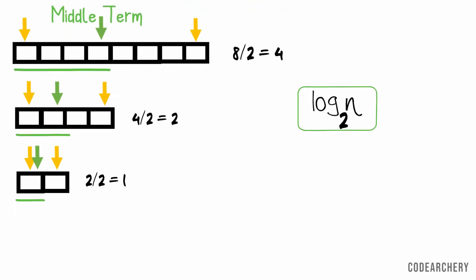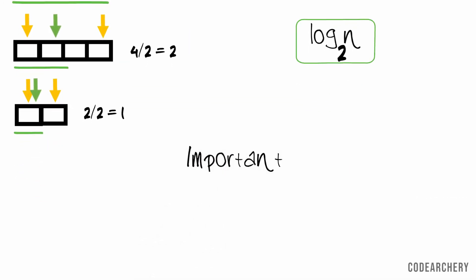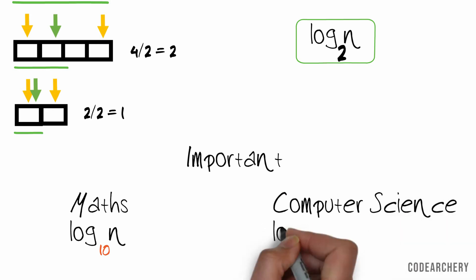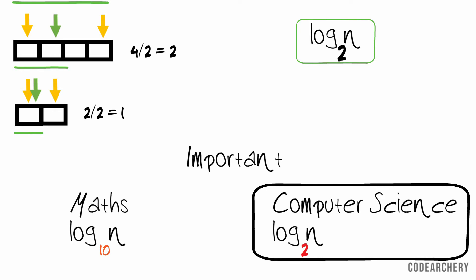There is one more interesting thing or I should say important thing about default log value you should know. In maths when we say log n then it means that its base value is 10. But in computer science when we say log n then it means its base value is 2. So this is a really very important point you should remember.